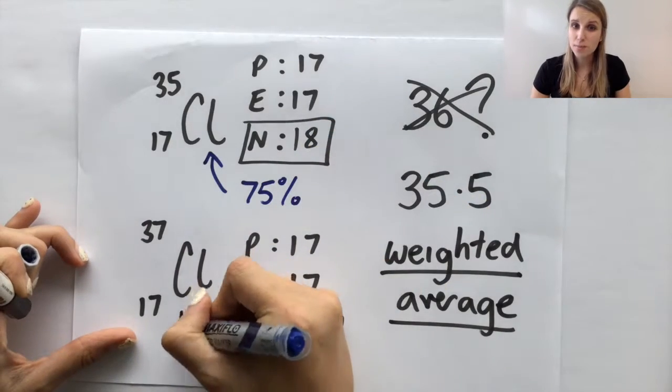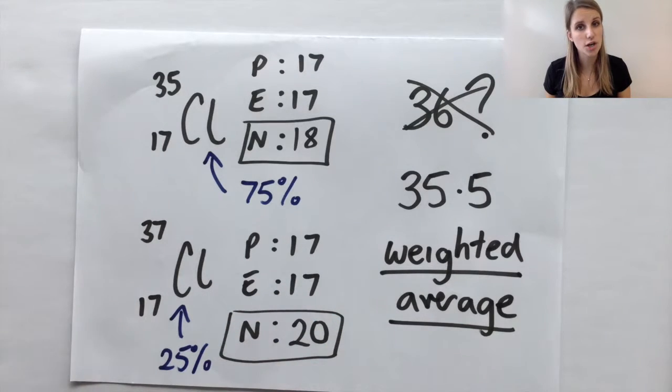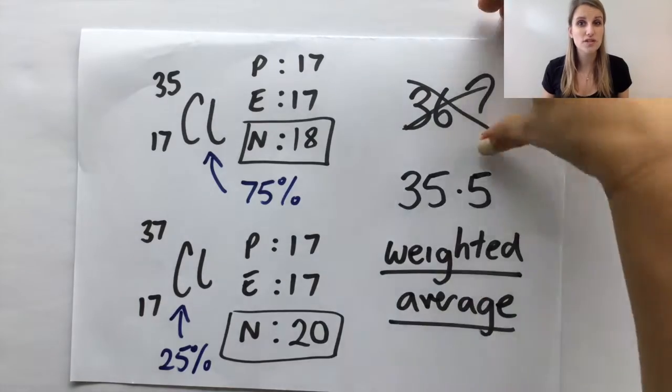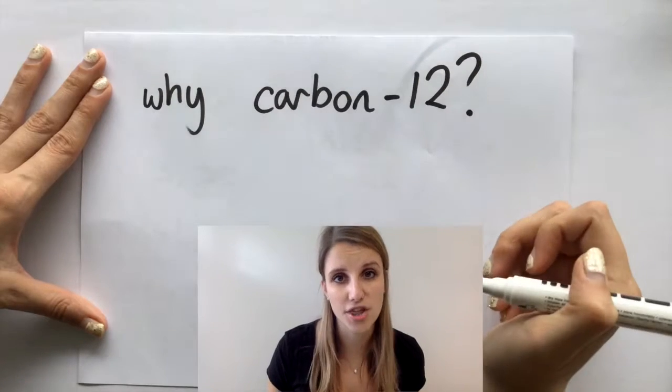In some syllabuses, people learn about how to work these out from the different isotopes, but it doesn't exist in ours. If you want to look this up, then by all means Google how to find this. The question you might have is why do we choose carbon-12 to compare everything to?